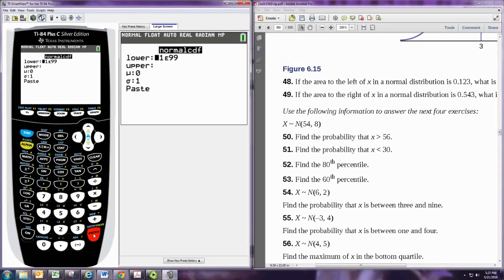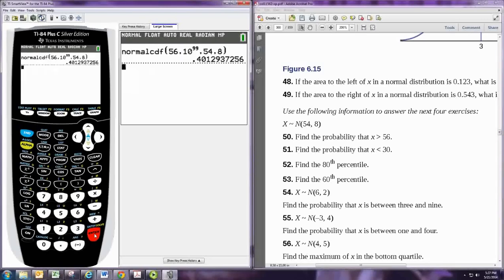Tell it the values that you want to use for x. We want the values greater than 56. That means our lower bound is 56. We have no upper bound, so we put in a number very large, 10 to the 99. The calculator thinks of this number as infinity, thus finding all numbers greater than 56. The mean is 54 and the standard deviation is 8, and the probability is calculated.